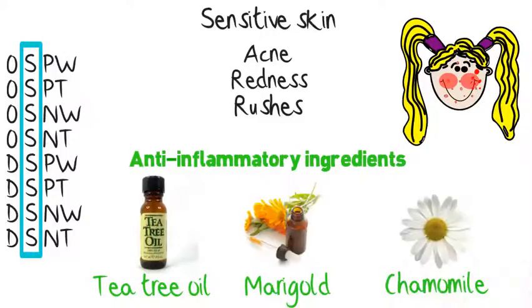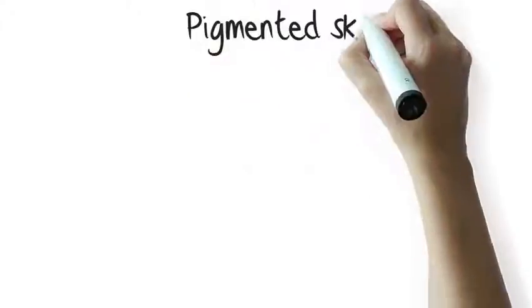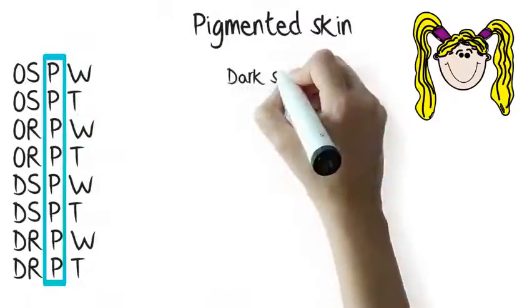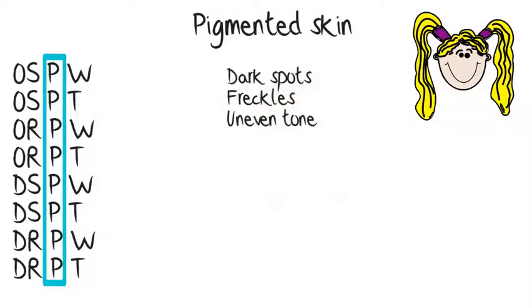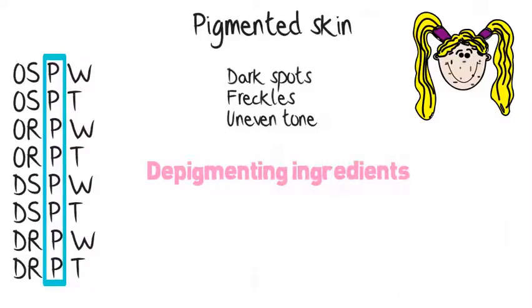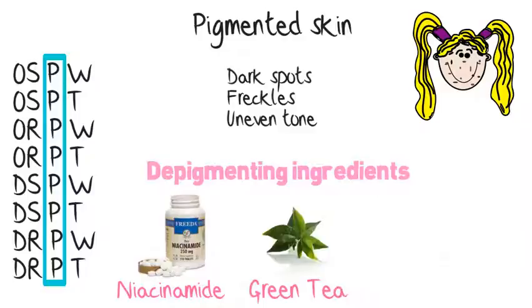For pigmented skin, plagued by dark spots, freckles and in general an uneven tone, use depigmenting ingredients like niacinamide, green tea and kojic acid.